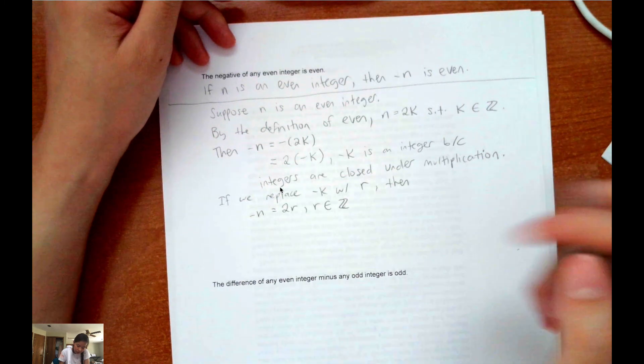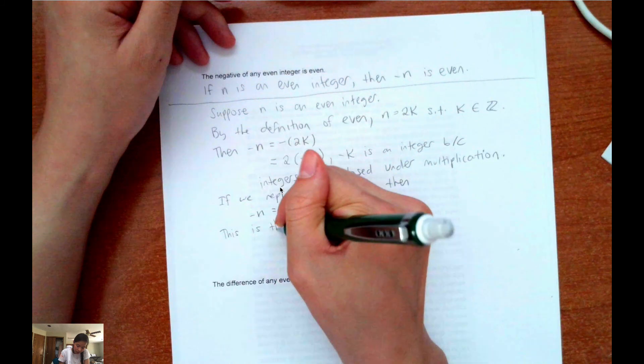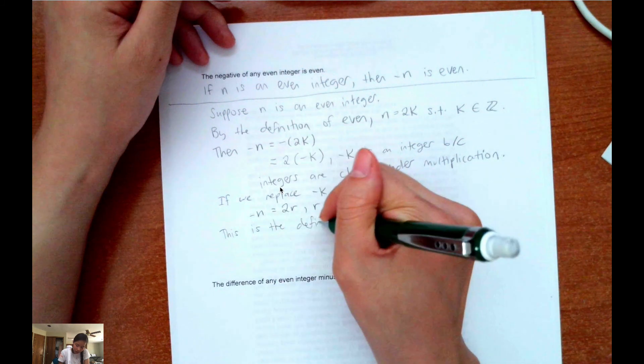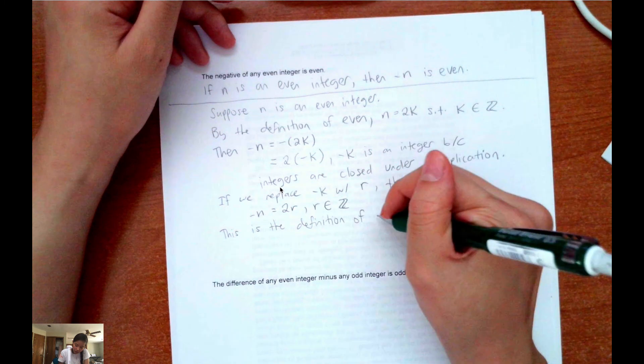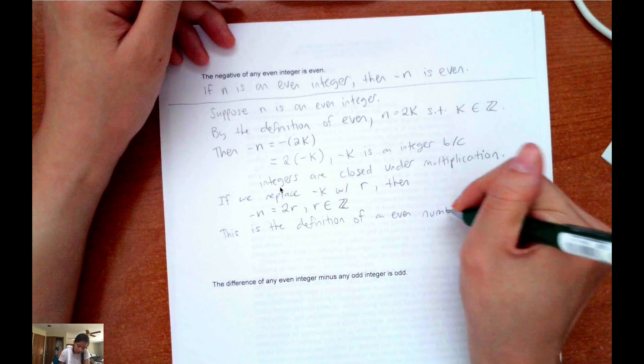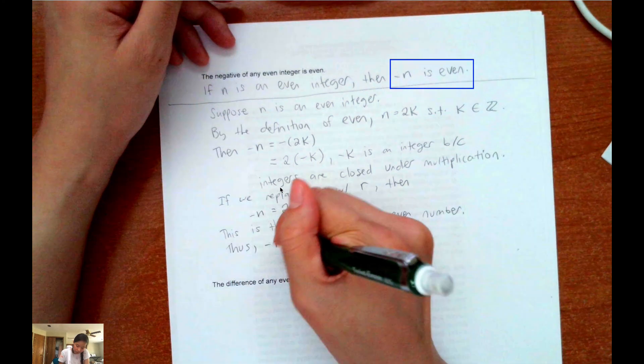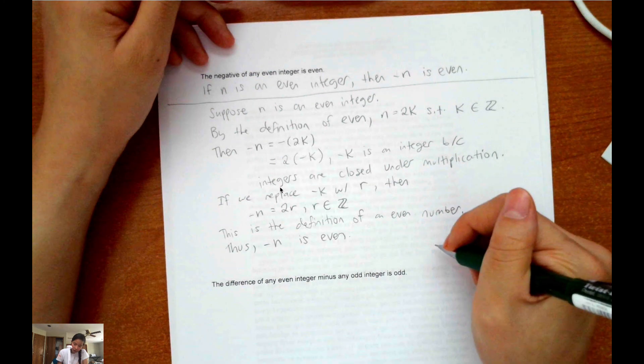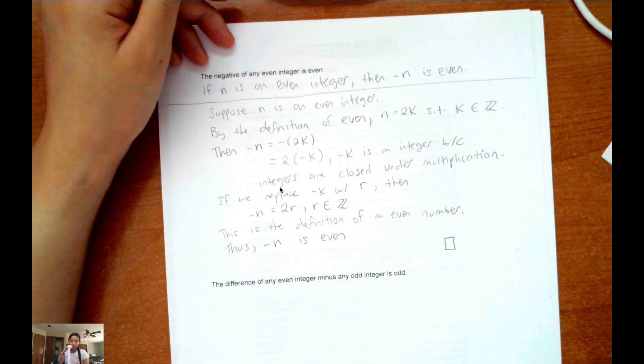this is the definition of an even number. Thus, negative n is even. You could also put like a little square box right here that just symbolizes my proof is done.